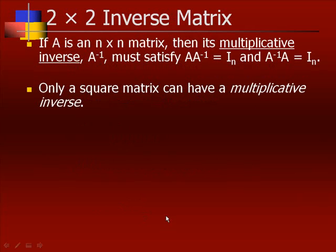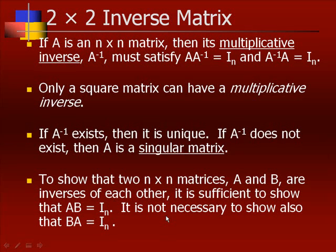Now let's switch over to inverses. If A is an N by N matrix, then its multiplicative inverse A⁻¹ must satisfy A times A⁻¹ equals I, and A⁻¹ times A equals I. Only a square matrix can have a multiplicative inverse. If A⁻¹ exists, then it's unique — meaning if there is an inverse, there is only one. If A⁻¹ does not exist, then we say A is a singular matrix.